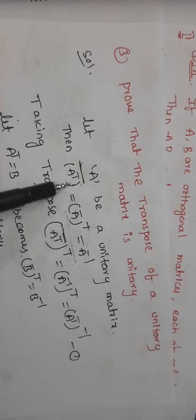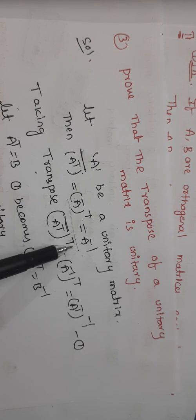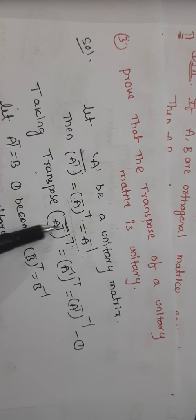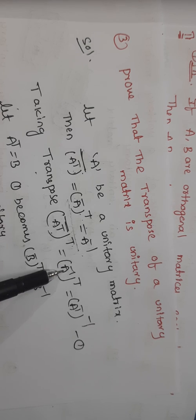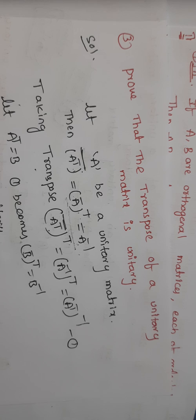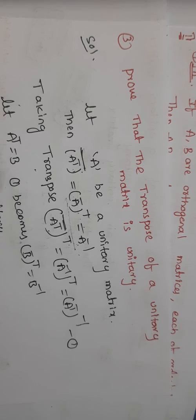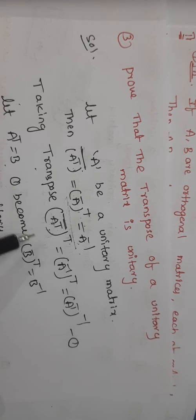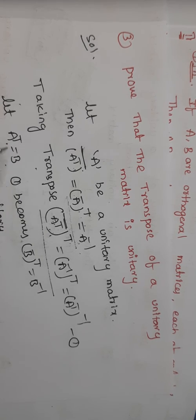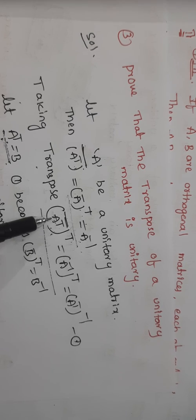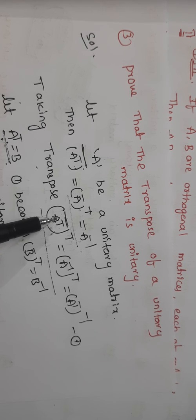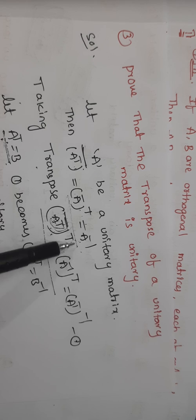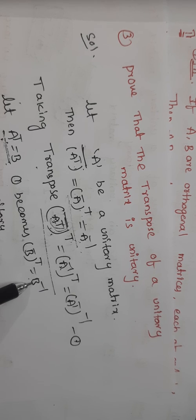I will apply transpose on both sides. This will get transpose. And this term is also, we will get the transpose. When we take transpose, then A bar transpose equal to B bar inverse. And A B bar transpose and A bar transpose equal to A inverse for unitary.